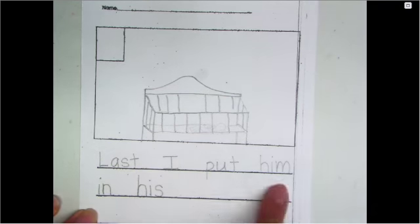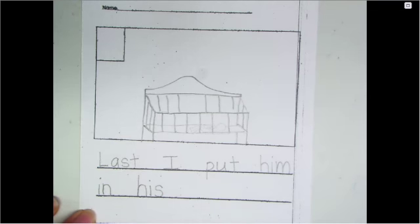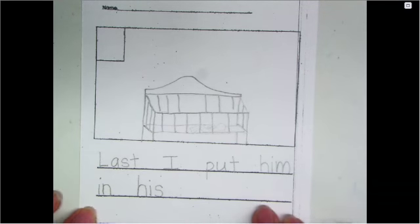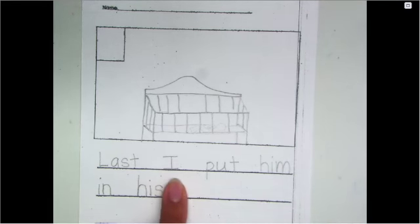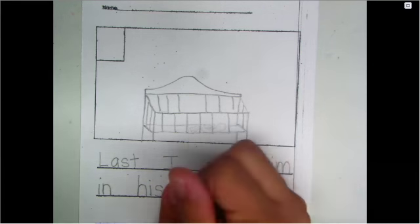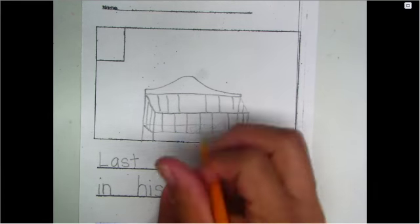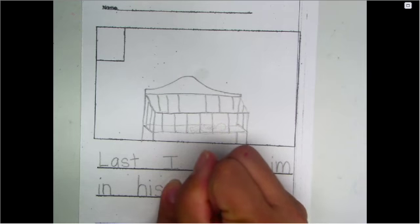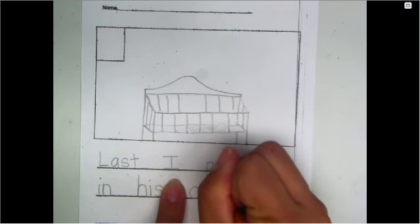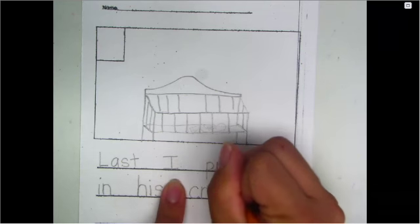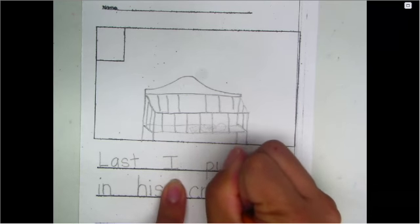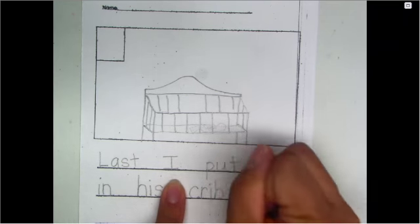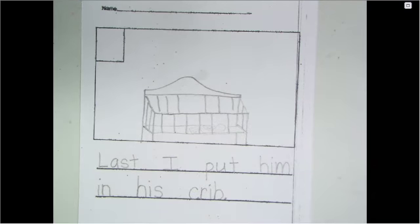In his what? Yeah. His crib. Crib. C. Crib. C-R-I-B. And a period goes at the end. All right. Thank you.